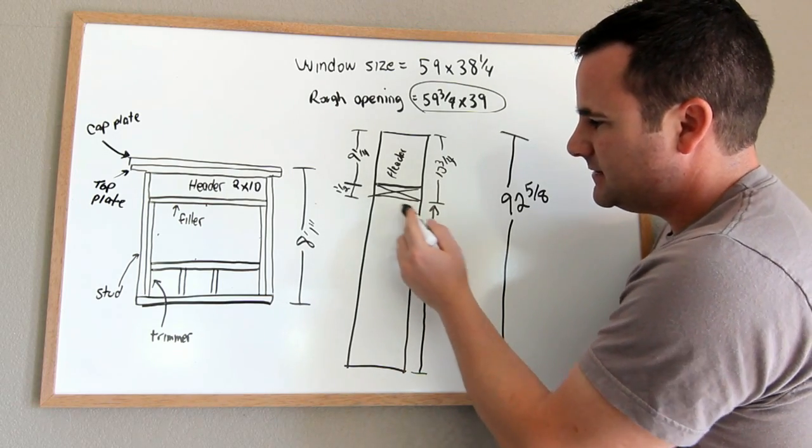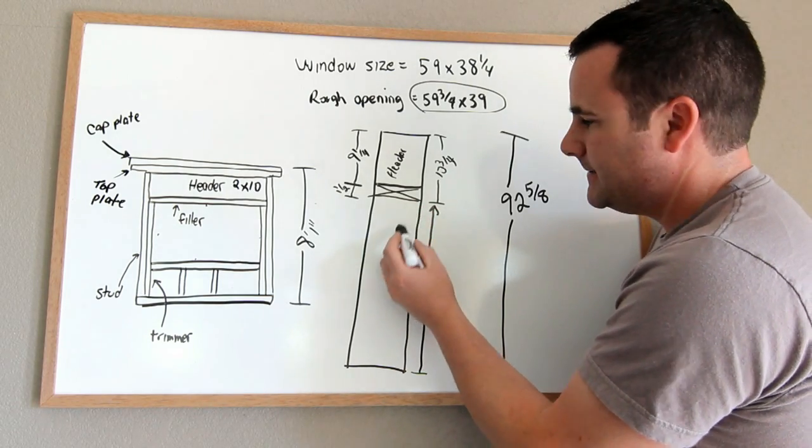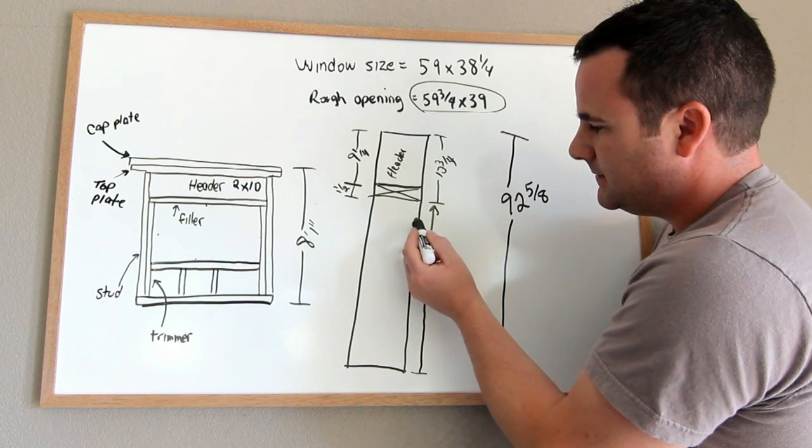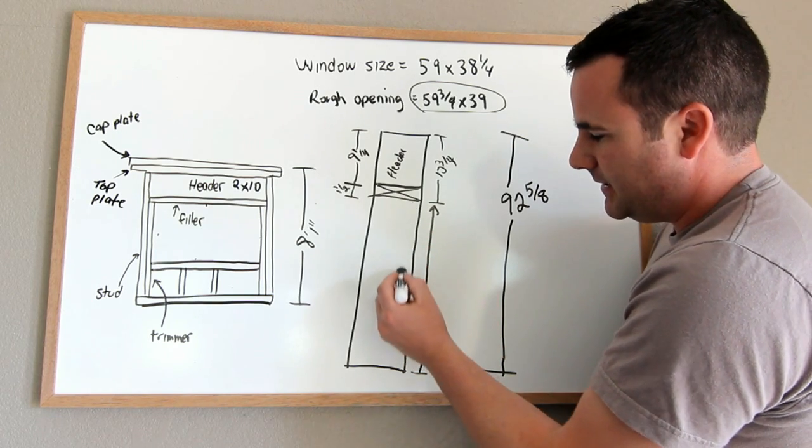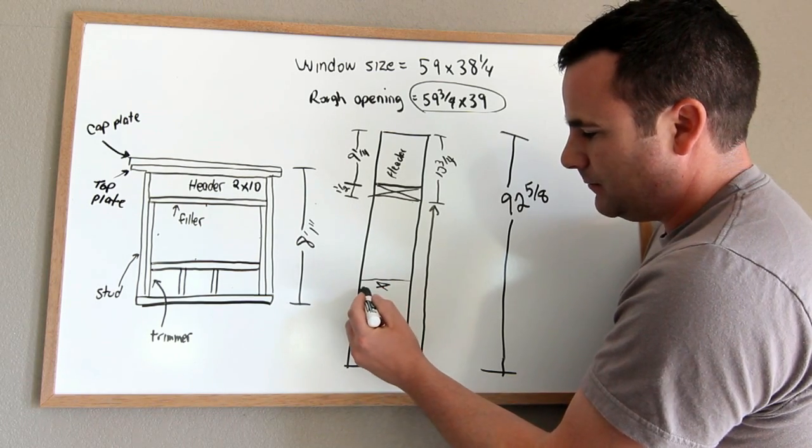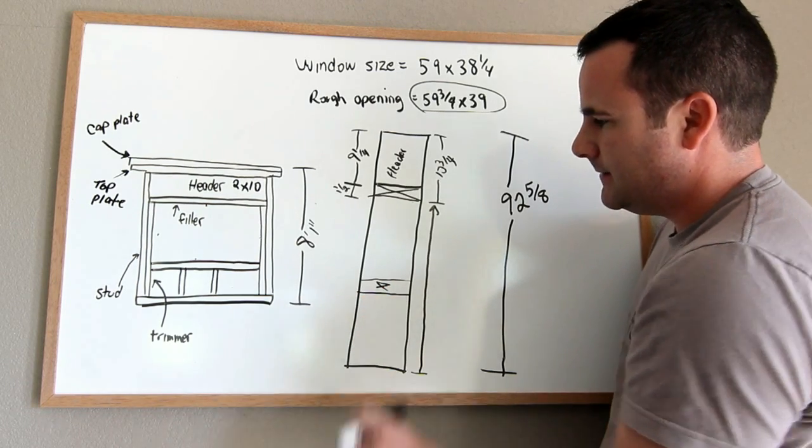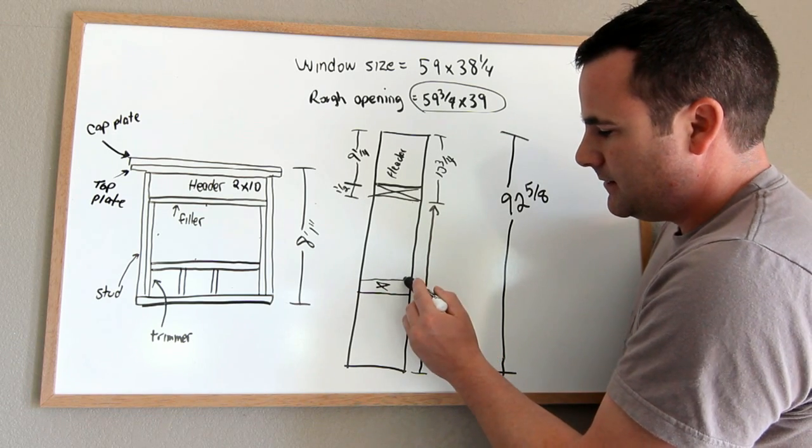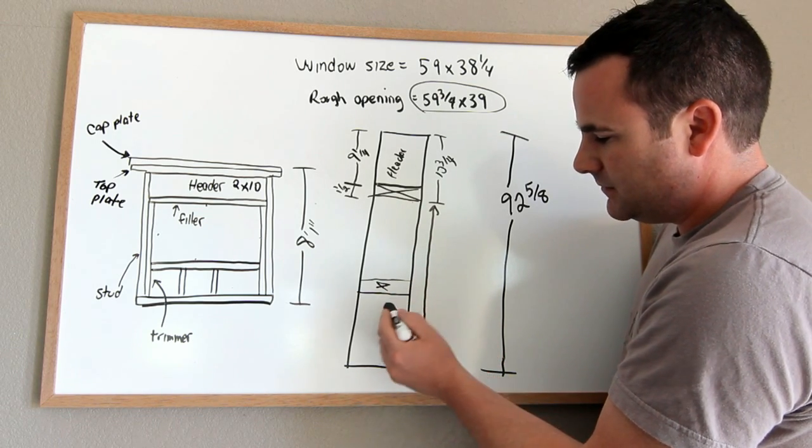So then, since I have this laid out on my stud, I measure down from the bottom of this down 39 inches, make a mark, and then my X or my rough sill goes there. So this is the height of the opening, the rough sill goes there.